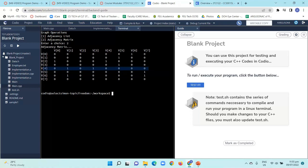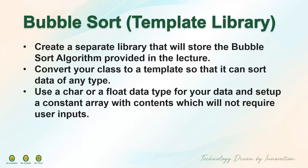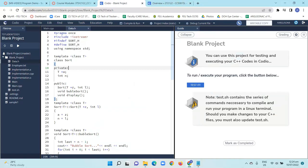That will be it for Module 8. Now we move on to the sorting topic. In this challenge, you will have to create a separate library that will store the bubble sort algorithm provided in the lecture. We will convert the class into a template so that it can sort data of any type. We will use a char or float data type for the data and set up a constant array with contents which will not require user inputs. Since it's a user-defined library with a template, you will need two files: the main.cpp and the data.h, where you will place the class definition and the operations.